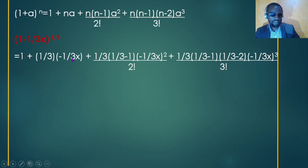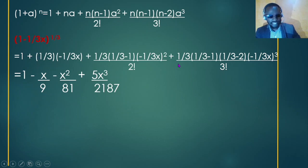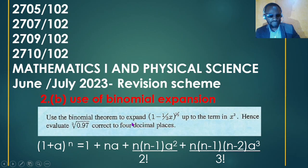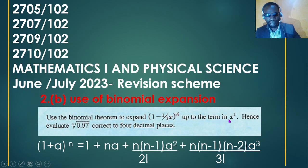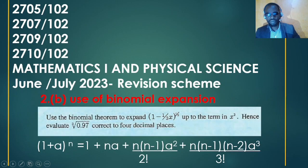After simplifying this expression we get: 1 − x/9 − x²/81 + 5x³/2187. This is the expanded form up to the x³ term. So far we have solved the first part of the problem, which asked us to use the binomial theorem to expand (1 − x/3)^(1/3) up to the term x raised to power three.